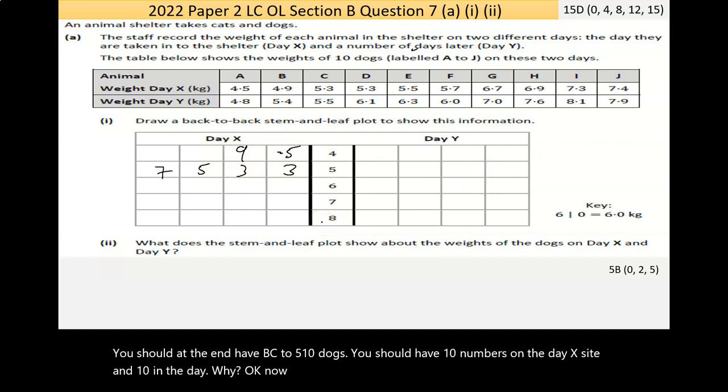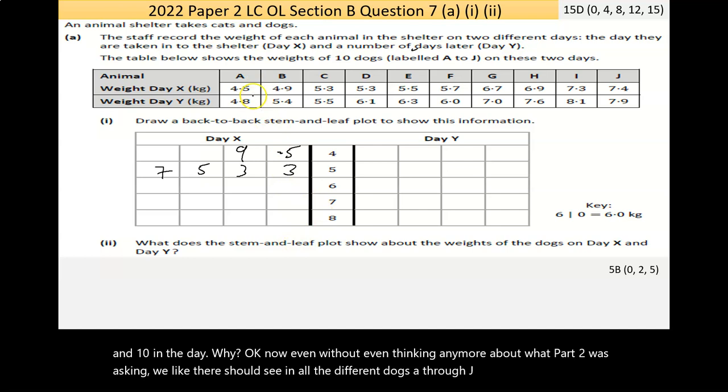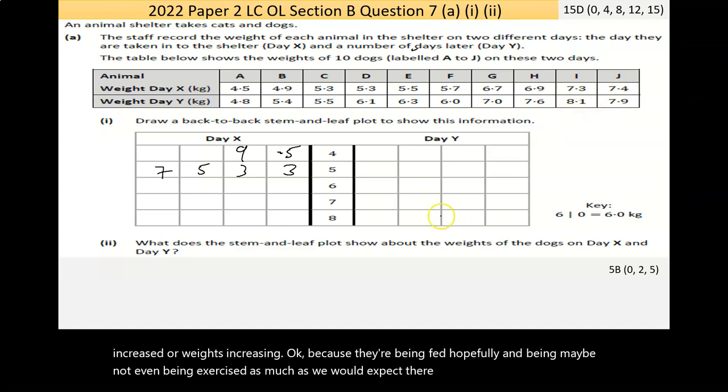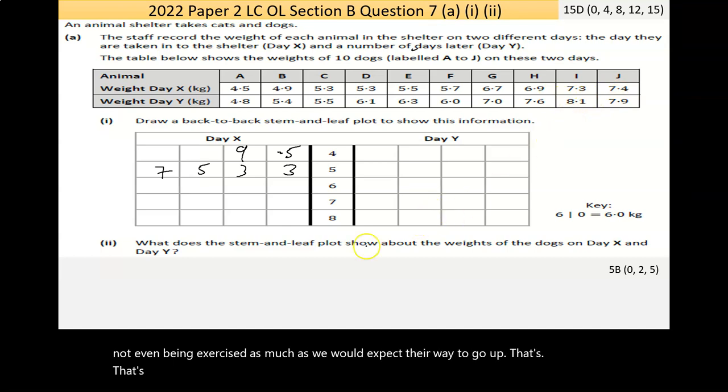You should, in the end, have maybe 10 dogs. You should have 10 numbers on the day X side, and 10 on the day Y. Without even thinking any more about what part 2 is asking, we likely should see in all the different dogs A through J that their mass is increasing, their weight's increasing. Because they're being fed, hopefully, and maybe not even being exercised as much. So we would expect their weight to go up.